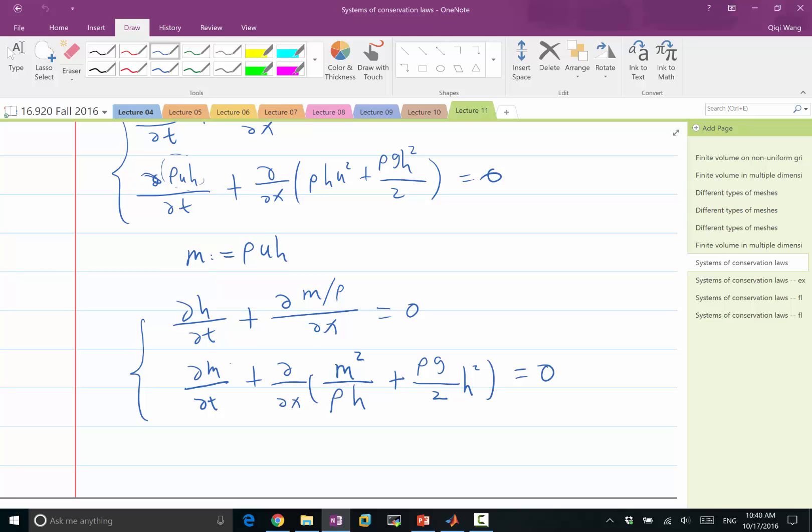So remember, in scalar conservation laws, we have characteristics. In smooth region of the solution, we have characteristics. And the characteristics determine along which direction, if you move in space-time along the characteristics, the solution stays the same.